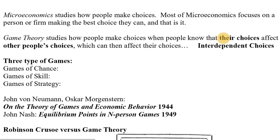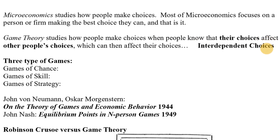Game theory looks at maximization and optimization problems where people know that their choice is not the end of the story — that their choice affects other people's choices, and the other people's choices are also going to affect their choices. So these choices are interdependent.